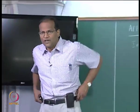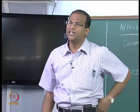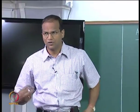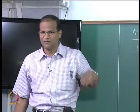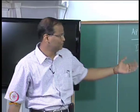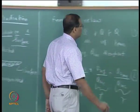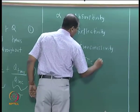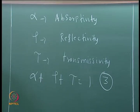We are talking about hemispherical total quantities here — the integrations are already done with respect to angle and wavelength. This is just to introduce you to the concept. We will go through individual absorptivities and reflectivities as we proceed. The important result is: alpha + rho + tau = 1.